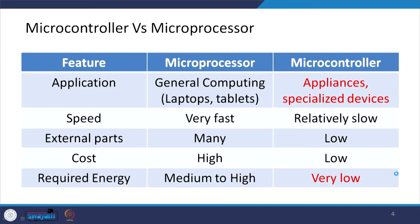Comparing microcontrollers versus microprocessors: in terms of application, the microprocessor is used for general computing purposes — for example, laptops and tablets — while microcontrollers are used in appliances or specialized devices. In terms of speed, the microprocessor is very fast while the microcontroller is relatively slow.